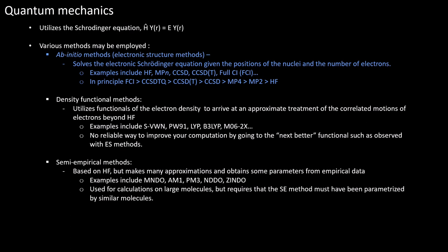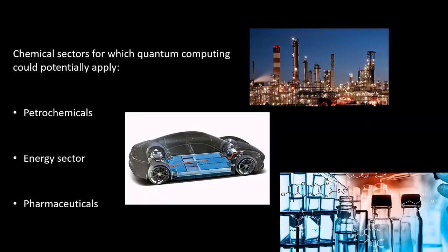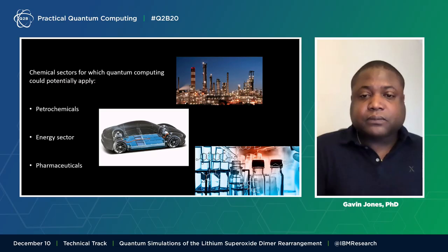Semi-empirical methods are based on Hartree-Fock, but make many approximations and obtain some parameters from empirical data. I've highlighted the electronic structure methods because this is currently the focus for IBM, mainly due to the fact that methods can be systematically improved to full CI, unlike DFT, for example.